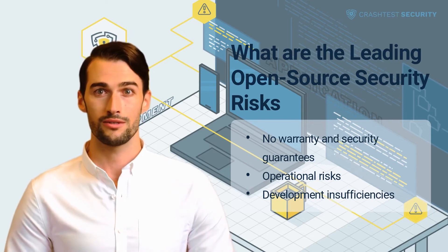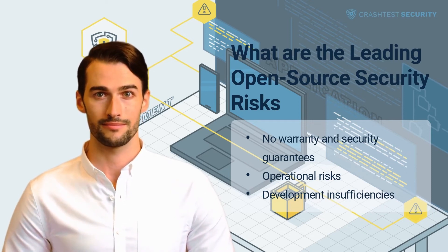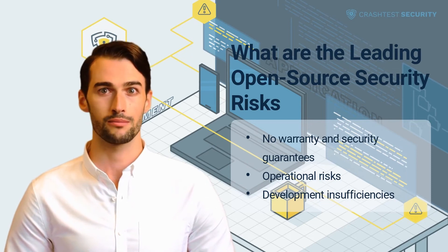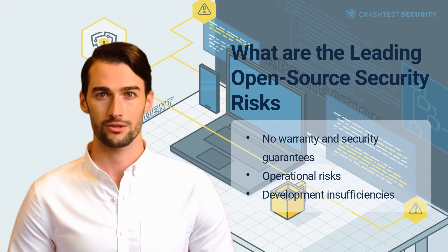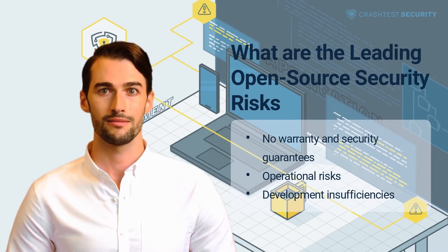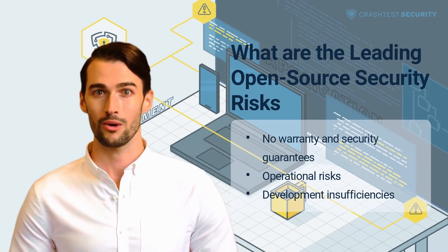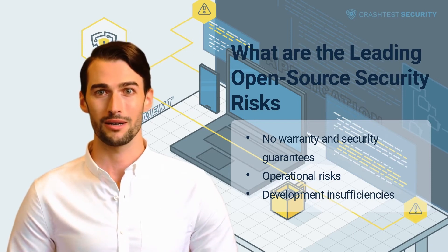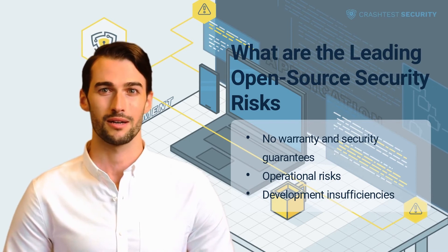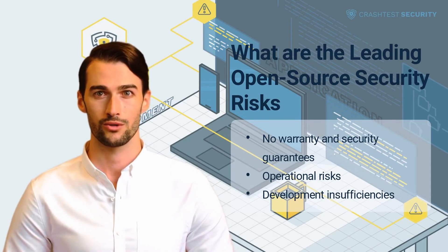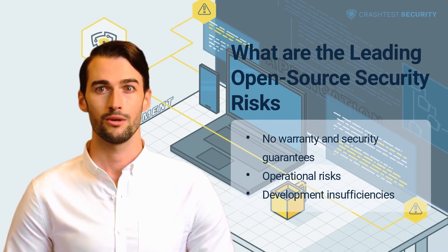Development Insufficiencies. Sometimes, despite all the bright minds participating in the open-source ecosystem, certain development malpractices and insufficiencies can still appear. Bad practices, such as copy-pasting code, can open up vulnerabilities and make them hard to track. When copy-pasting, any vulnerability already present in the code will also be transferred to your project.